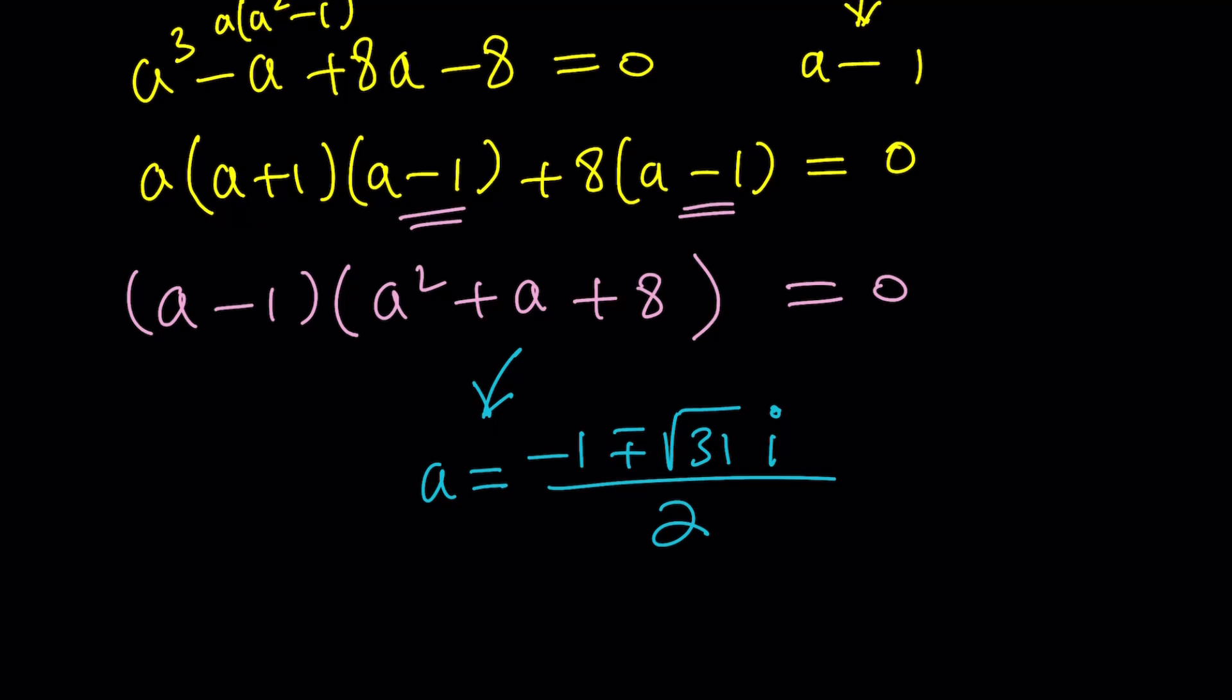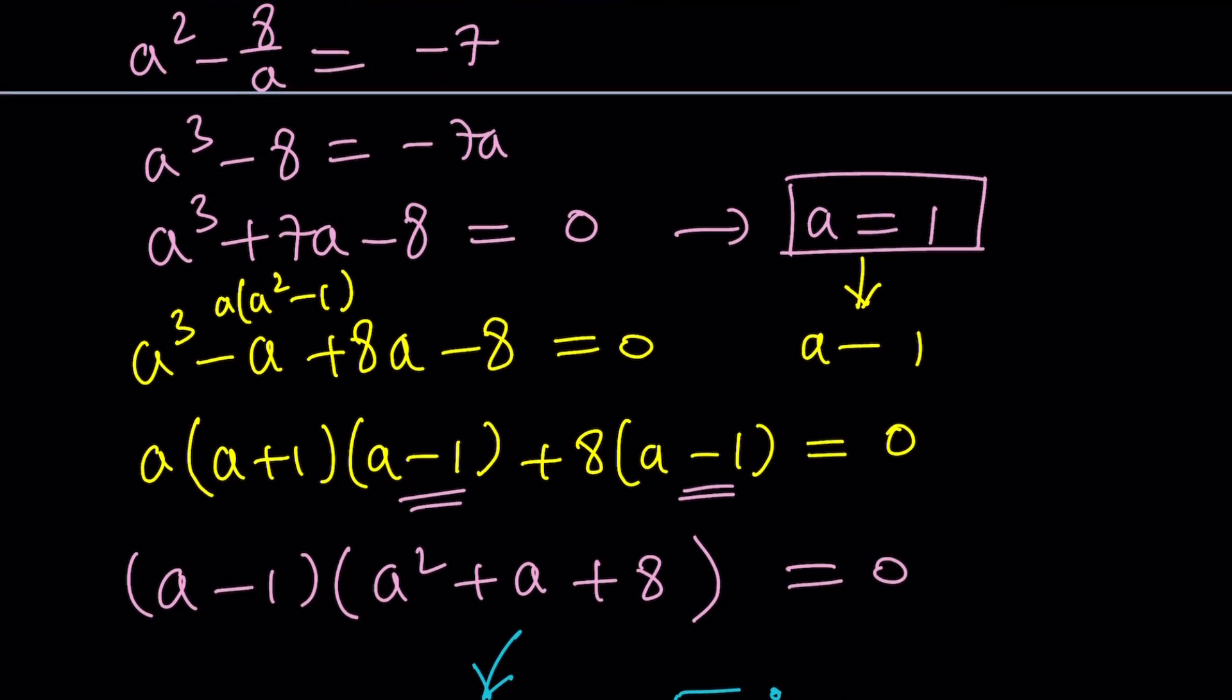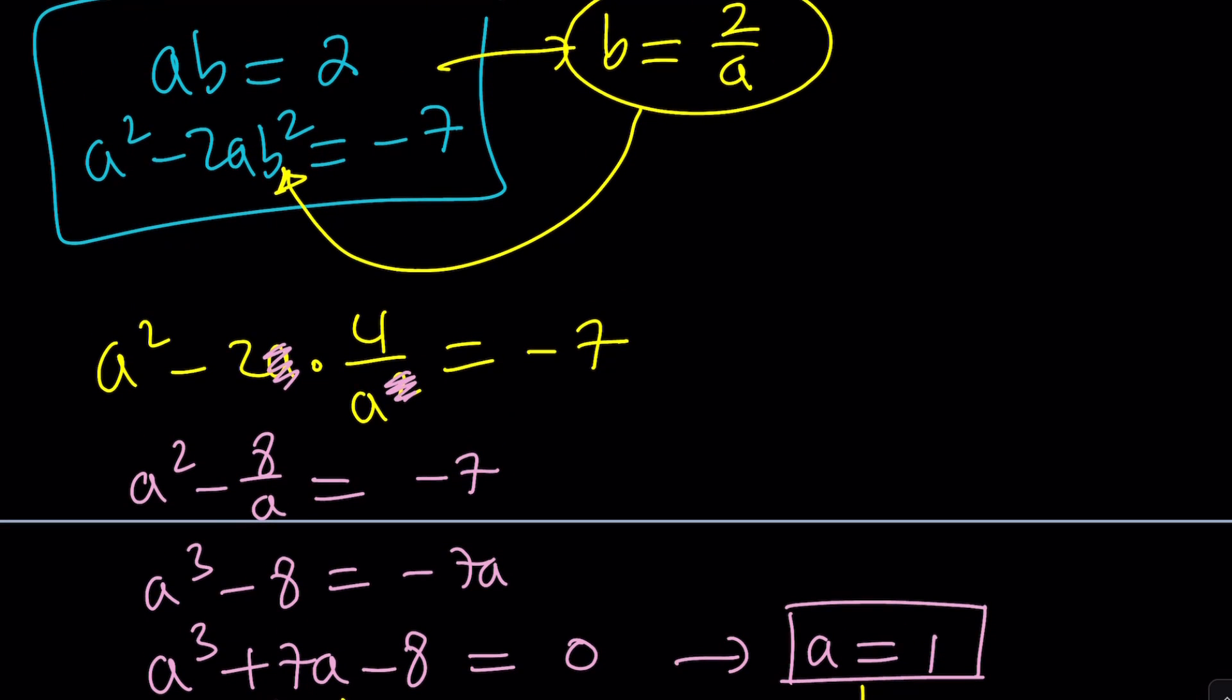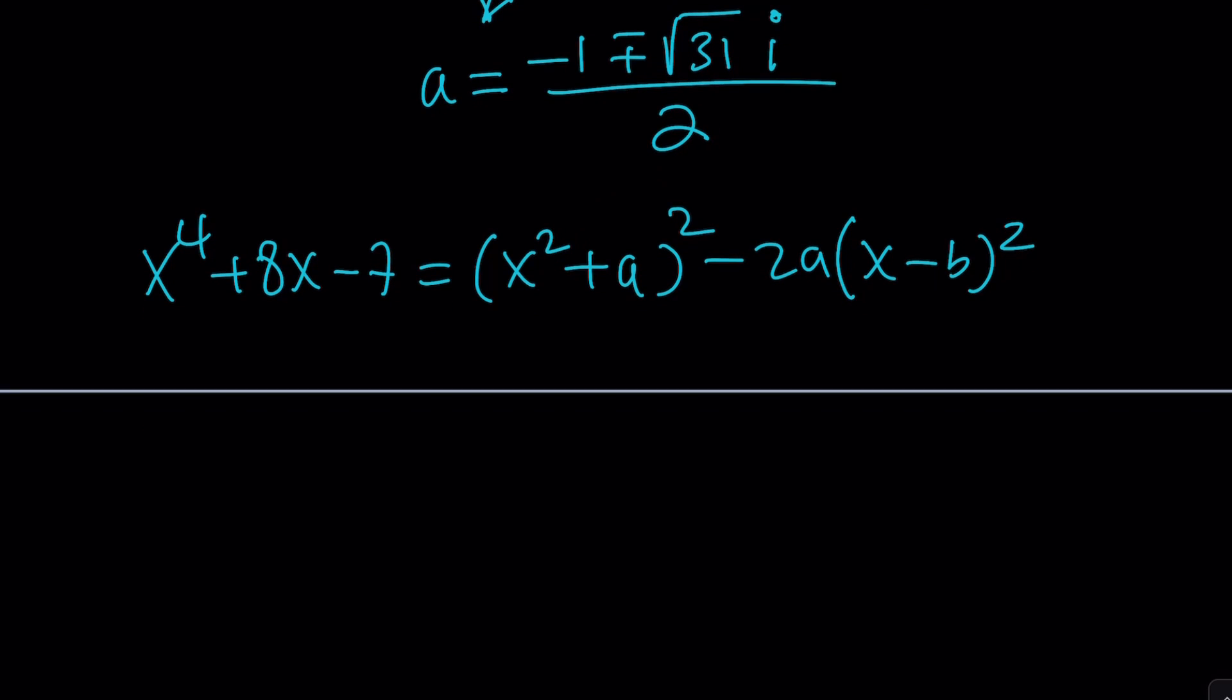That's pretty good. Now, what do we do with this? Now we have our factorization. Because remember, at the beginning, we had written this as x squared plus a squared minus 2a times x minus b squared. But wait a minute, what is the value of b? Do we know that? No, but we can find it. If a is 1, b is going to be 2 because b is equal to 2 over a, or their product is equal to 2. So if a is 1, b is 2. Make sense? a is 1, b is 2. Remember that.